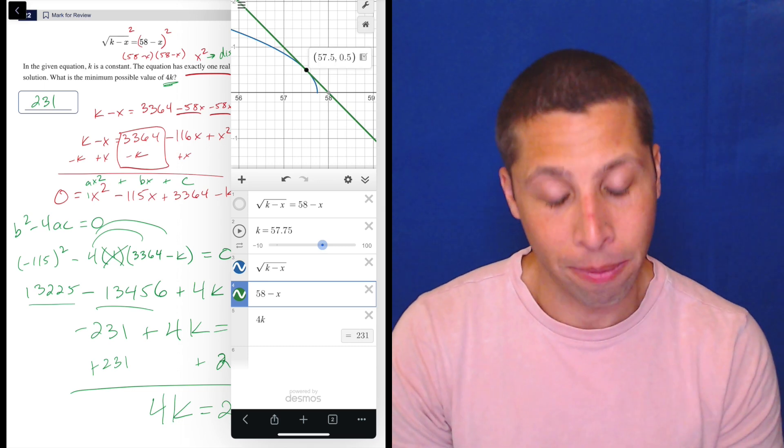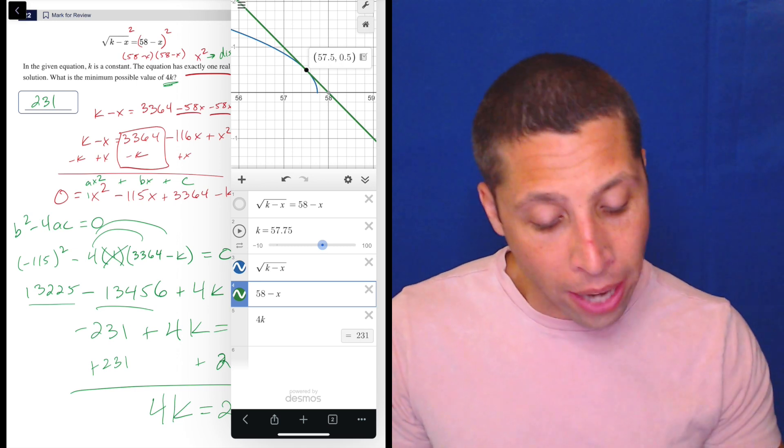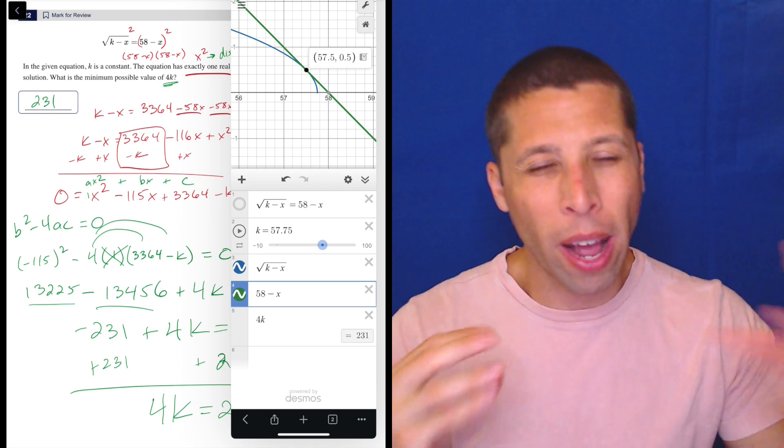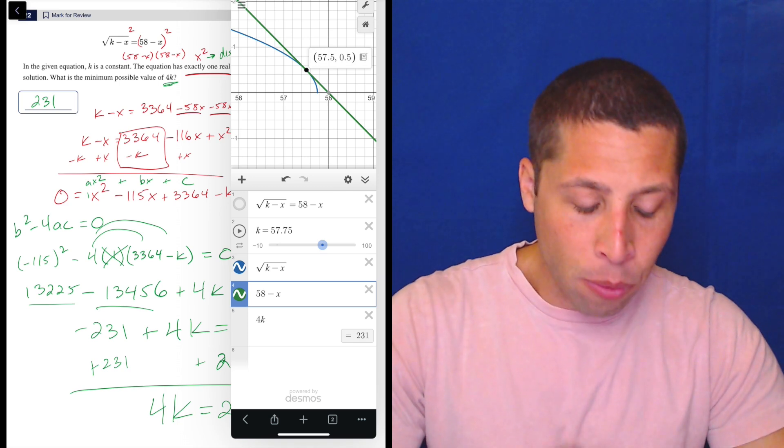Again, I don't really understand why that's happening. It has something to do with the radical that's messing with this in some way. And then Desmos doesn't really handle radicals very well because of something it's doing on the back end. It doesn't really matter. I wouldn't worry about it.